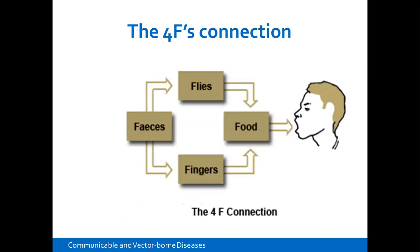The 4Fs framework shows how we get this infection. We have flies that contaminate; we have faeces that carry the bacteria; we have dirty fingers that contaminate food. All of this is taken orally. So faeces may have the bacteria, flies land on them, then the flies end up on food or fingers, which ultimately end up in the mouth.